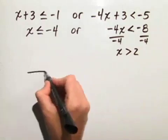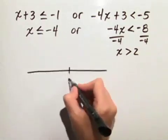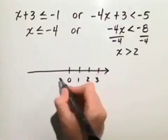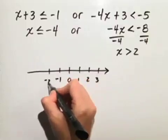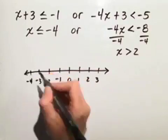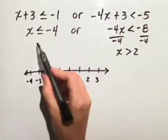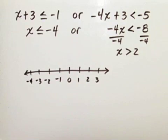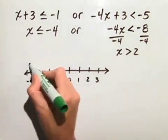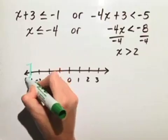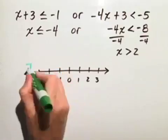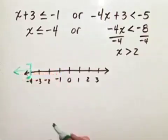So let's look at a number line and graph this solution. First, we have x is less than or equal to negative 4. So starting at negative 4, we want numbers less than or equal to it, so we use the bracket and draw our arrow to the left.